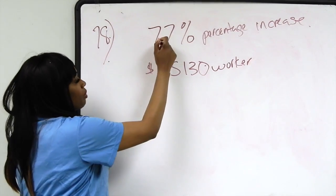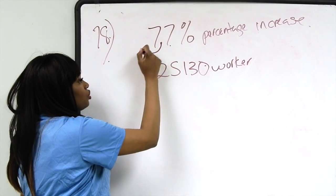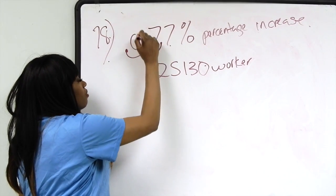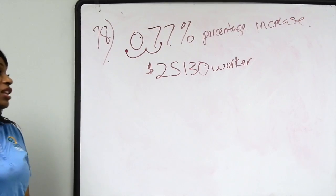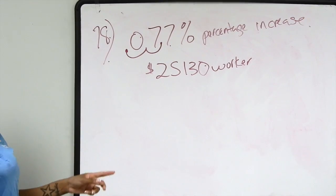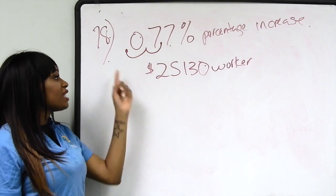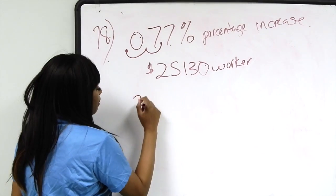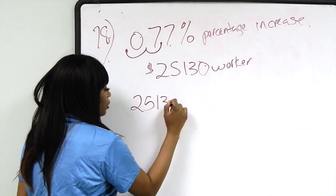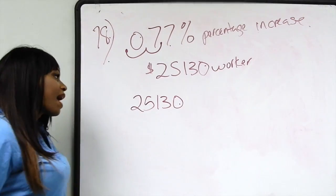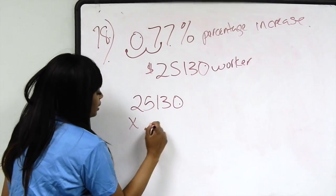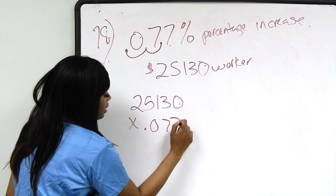And if I move this percentage two places to the left, one, two places, our percentage as a decimal will now be 0.077 and 7.7% are the same thing. I'm going to multiply $25,130 by 0.077.